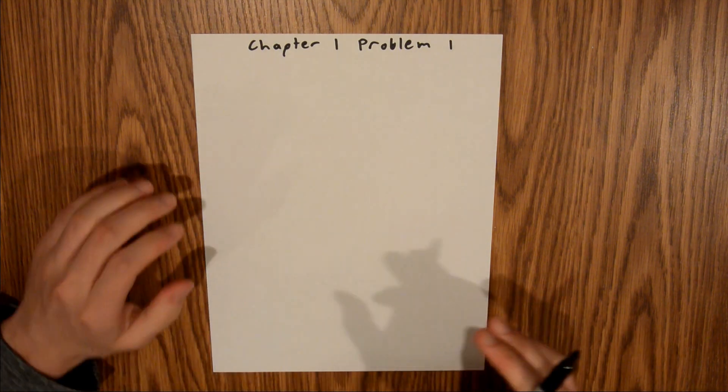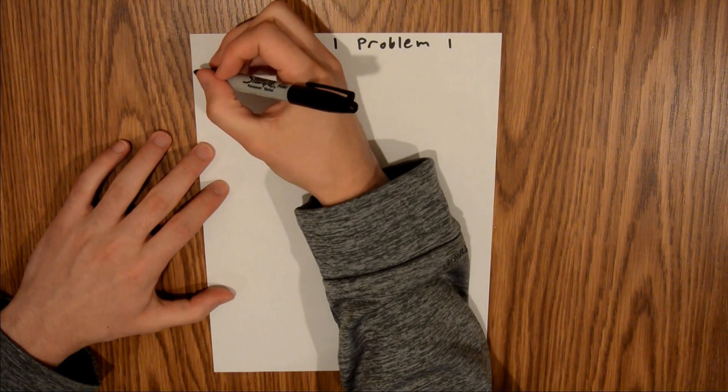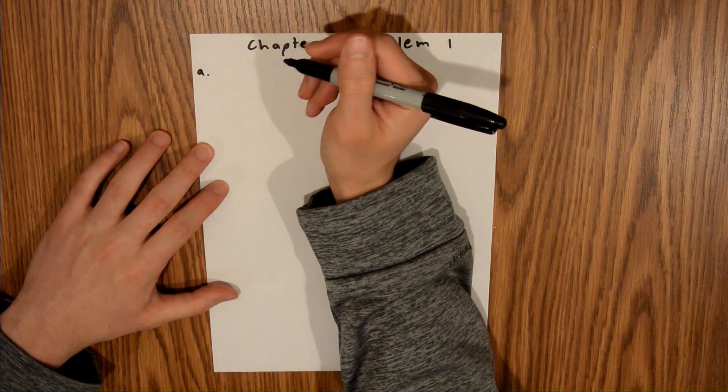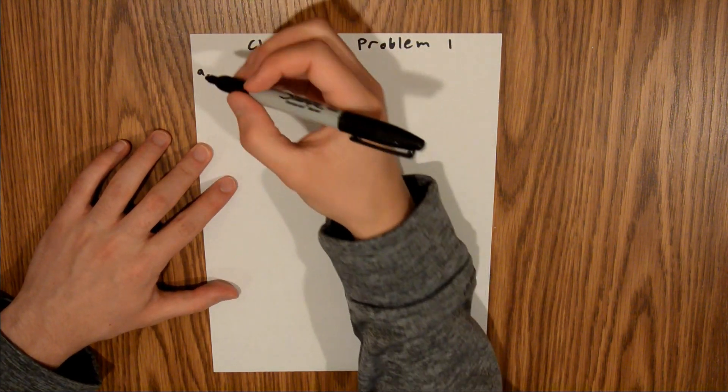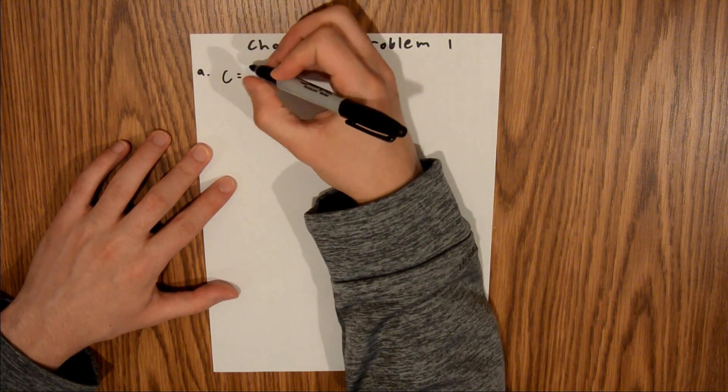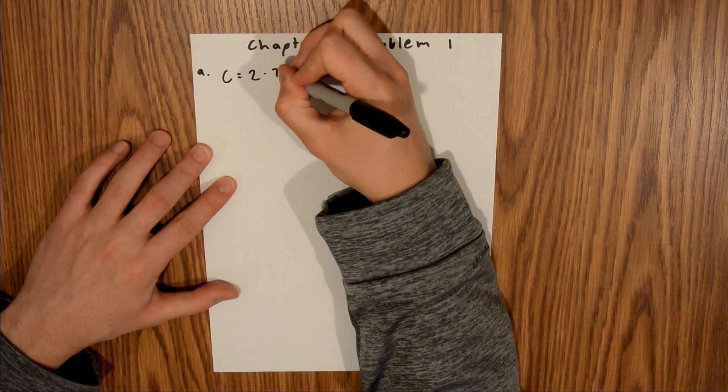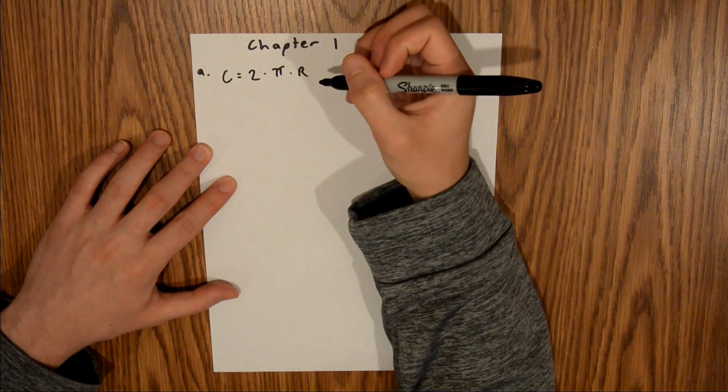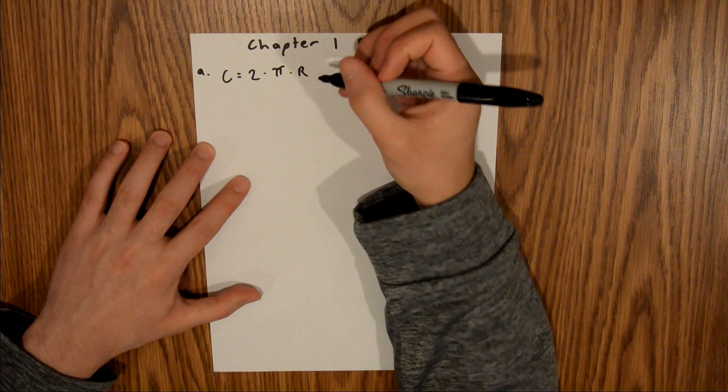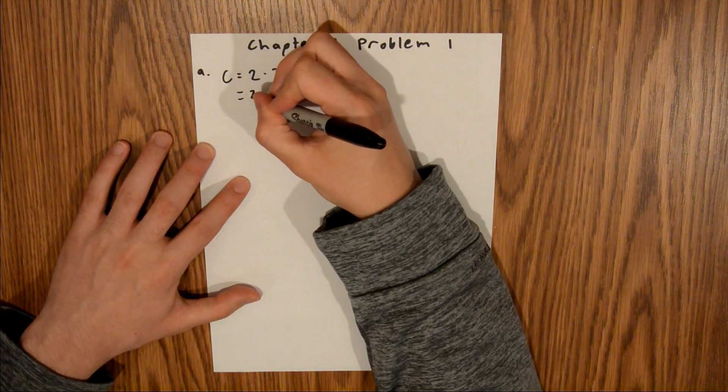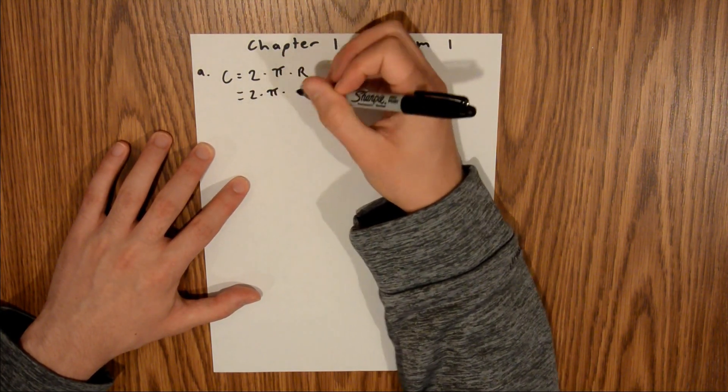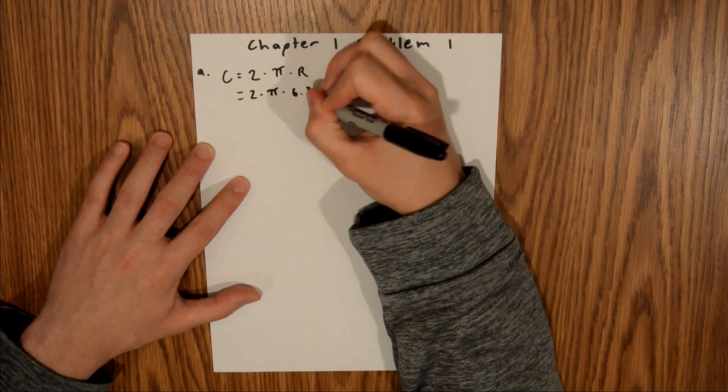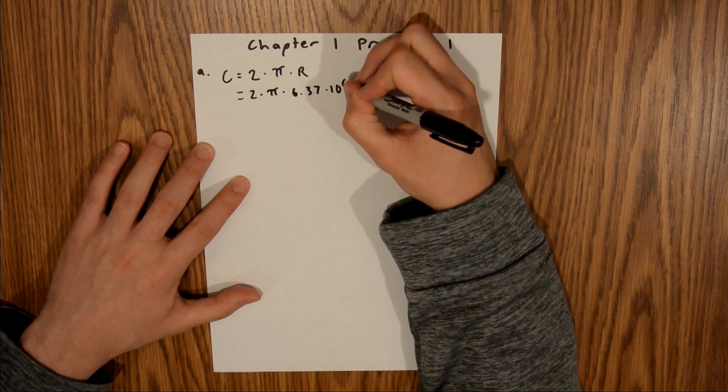And so for Part A, we are looking for the circumference, and we know that Earth is a sphere, and so the circumference of a sphere is equal to 2 times pi times the radius, and we are given the radius in the problem, and so this is equal to 2 times pi times 6.37 times 10 to the 6th meters.